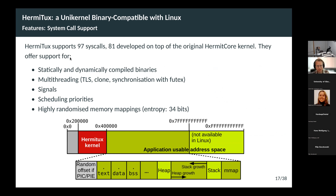We do not support the entire Linux ABI, which has 350+ system calls, so Hermitex is more like a proof of concept. Still, we support around 100 system calls, giving support for statically and dynamically compiled binaries, threading, signals, and scheduling priorities. One cool thing is that because we are able to locate the kernel at a very low address not used by the application, we have almost the entire address space available for the application. This is a nice security feature — we get much more entropy for address space randomization than vanilla Linux or even Linux with security patches.